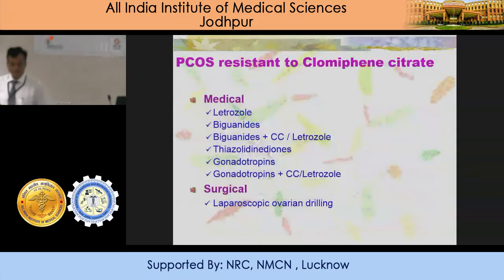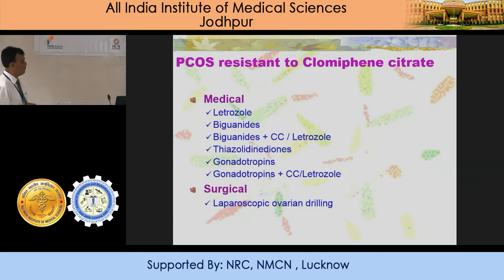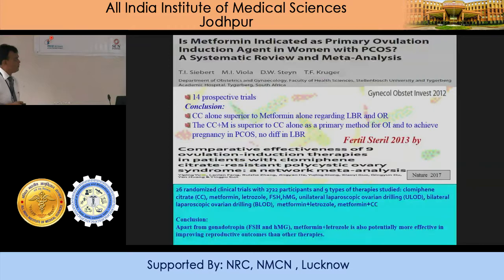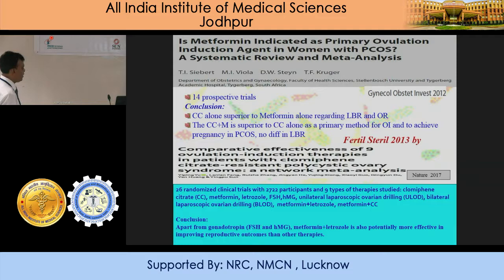When there is resistance, you can also use letrozole with metformin — though metformin alone may not do the job, you can combine them. A retrospective trial of 2012 clearly shows no significant difference in live birth rate compared to CC. There are other studies — many trials — and their conclusion is that apart from gonadotropins, metformin plus letrozole is also potentially more effective in improving reproductive outcomes. On metformin plus letrozole, there is a better effect.